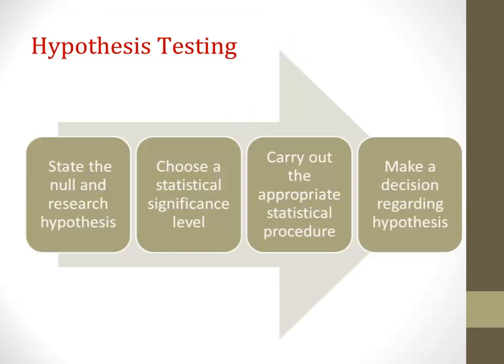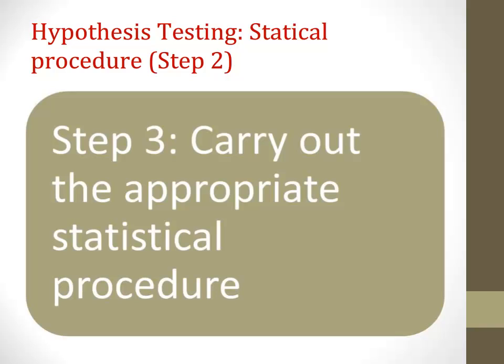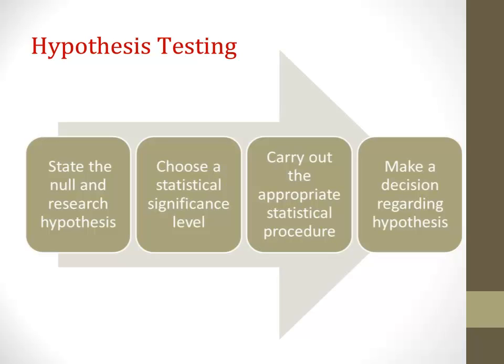This concludes our discussion about step two. We now move on to step three: carrying out the appropriate statistical procedure. This first requires that you choose the correct statistical procedure that aligns with the hypotheses you proposed. This is discussed in detail in other tutorials — refer to the introduction tutorial and the tutorial on choosing the correct statistical analysis. Step three is simply to carry out the appropriate statistical procedure.